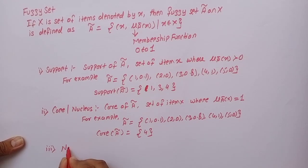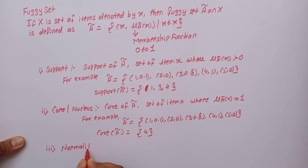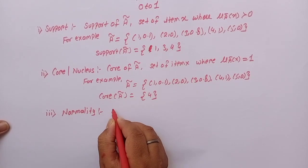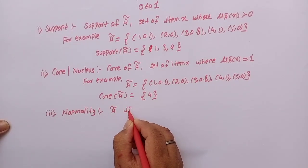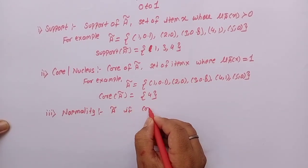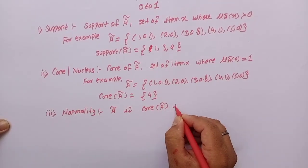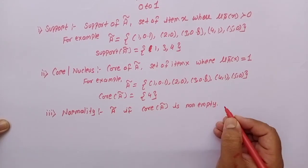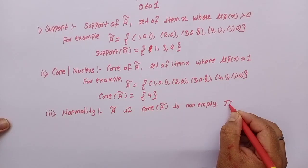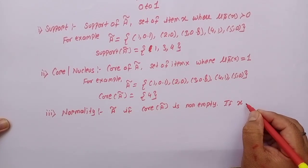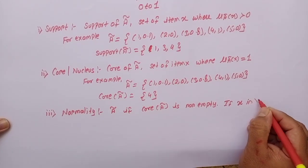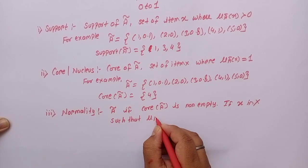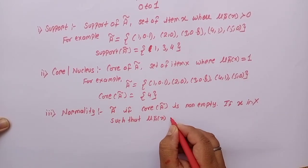Next, normality. Fuzzy set A is said to be normal if core of A is non-empty, or in other words, if there exists x in set X such that membership function of x equals one.